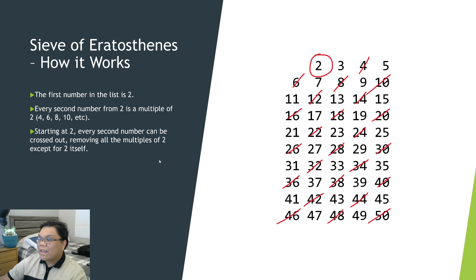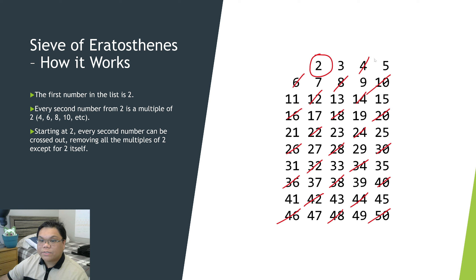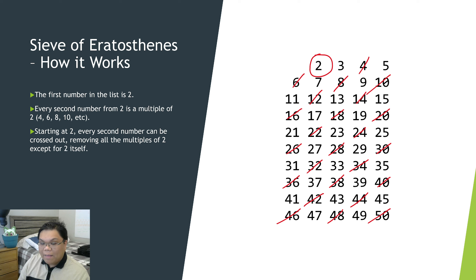Let's begin. We start at 2 and go up from 2, crossing out numbers that are multiples of 2: 4, 6, 8, 10, 12, 14, 16, 18, 20, and so on. Those are multiples of 2, and because they're multiples of another number, they cannot be prime numbers. So we cross out those numbers.